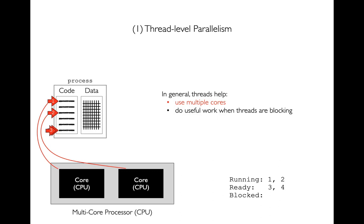If that sounds complicated, it's because it is — it's very hard to reason about and even very good programmers struggle to get it right. The two benefits are: one process can use more than one core, and if one thread is blocked on a read or whatever, other threads can still be worked on. If you have lots of threads doing I/O, you'd want more threads than CPUs so that the waiting ones don't matter — there's always other work to be done.